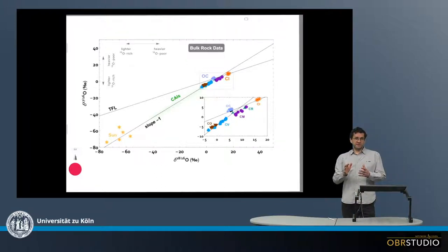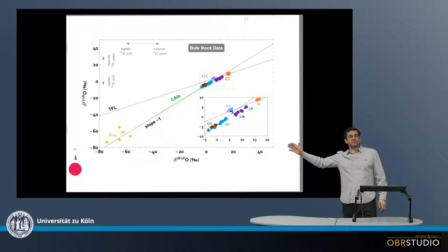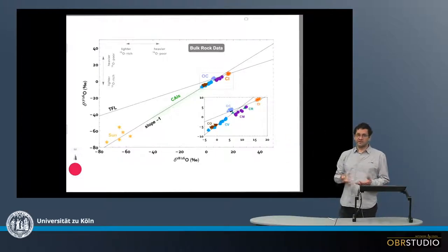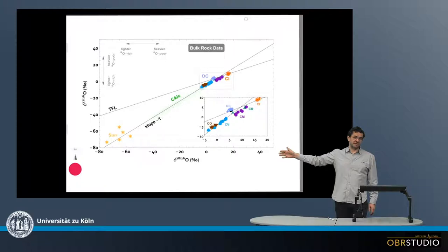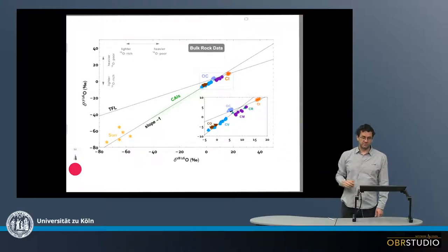And the 16-O is more rich towards right and from top to bottom, and because oxygen-16 is the lightest isotope, it is also said that the isotope composition gets lighter in this direction to the right and from top to down.